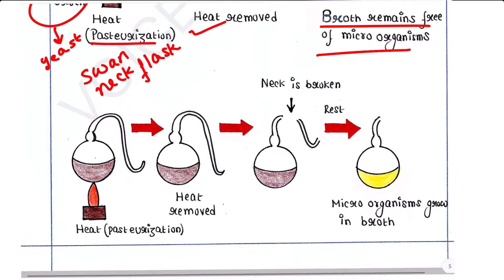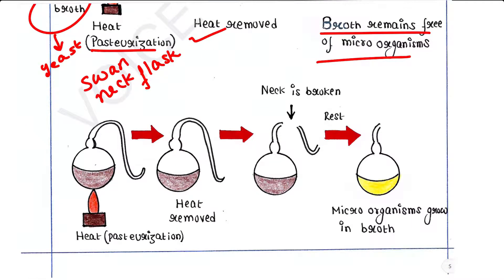Then Pasteur had a duplicate set, and in this case what he did, he broke the neck here. He broke the neck of that flask and allowed it open in the air. After some time, he observed a cloudy microbial growth and concluded life comes only from pre-existing life.